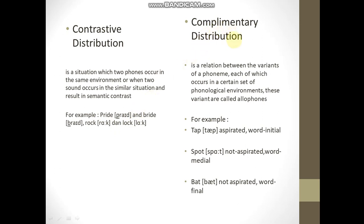Next: complementary distribution. Complementary distribution is a relation between the variants of a phoneme, each of which occurs in a certain set of phonetic environments. These variants are called allophones. For example, with the phoneme P: 'tab' — P occurs in word-initial position and is aspirated. 'Spot' — P occurs in word-medial position and is not aspirated. 'Bat' — P occurs in word-final position and is not aspirated.